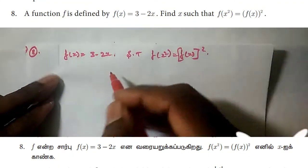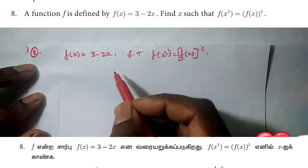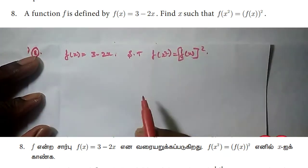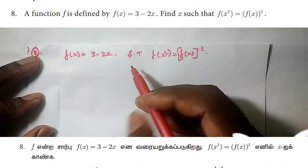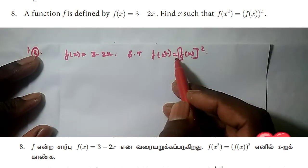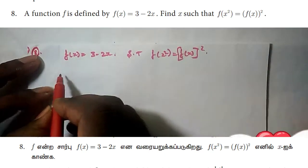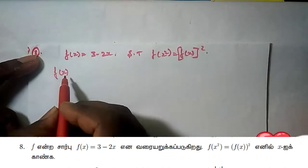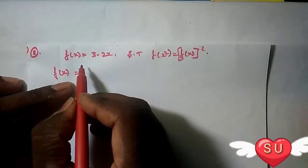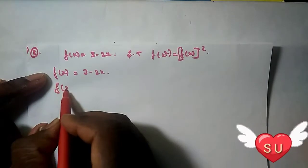Hi friends, welcome. In this video, X is 1.3. Given f(x) = 3 minus 2x, we need to show that f(x²) equals [f(x)]² whole square. So first, f(x) is defined as f(x) = 3 minus 2x. Next, we find f(x²).